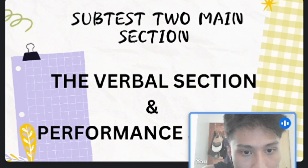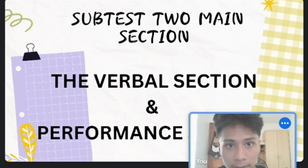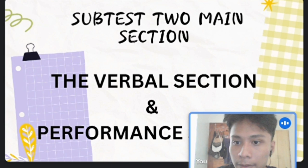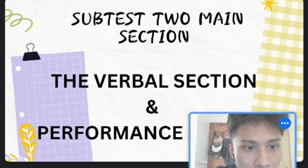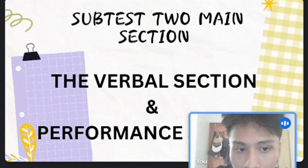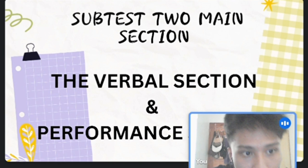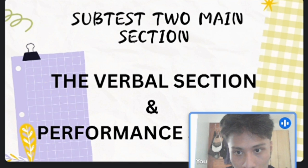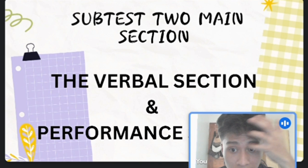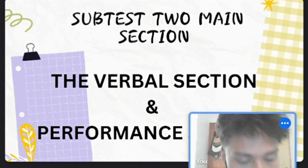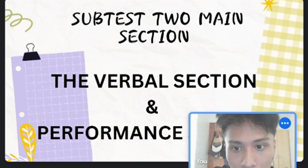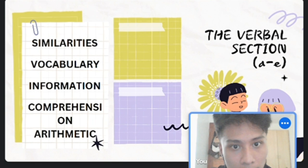This test has continued to be updated for contemporary use. The current version of the WAIS is version 4, which includes several subtests designed to measure various cognitive abilities, including verbal comprehension, perceptual reasoning, working memory, and processing speed. We will focus on the two main sections of the WAIS-4: the verbal section and the performance section. I will only tackle the verbal section.